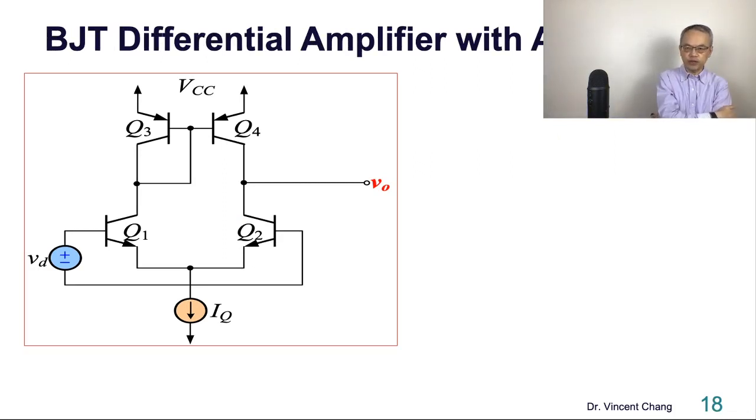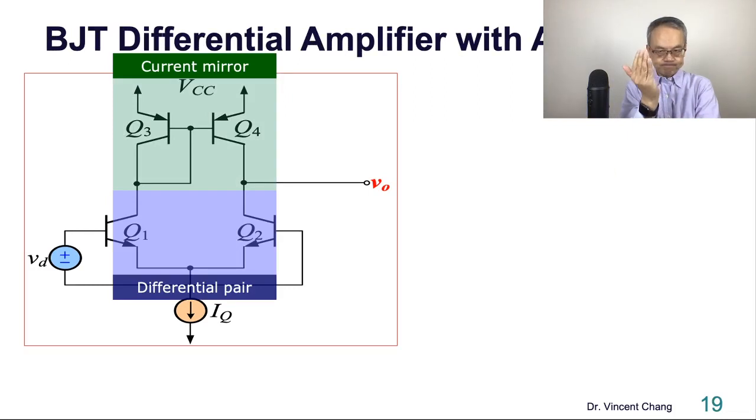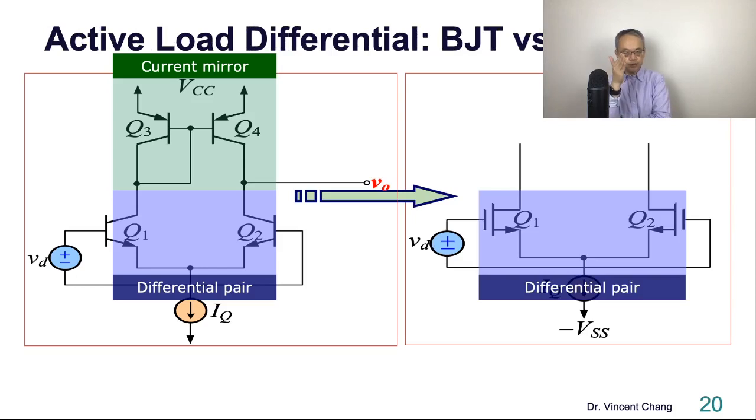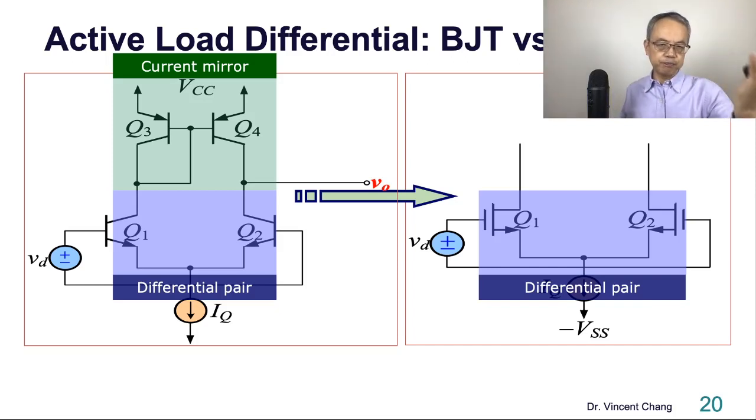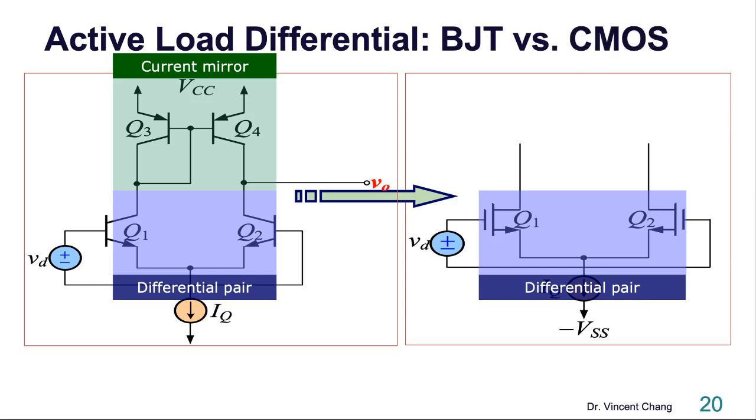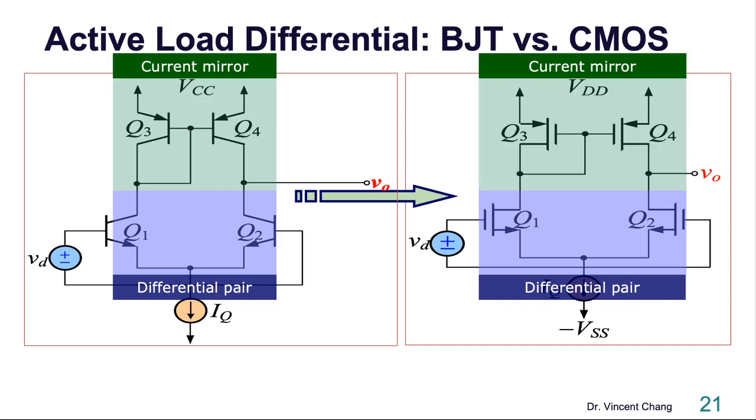BJT differential amplifier with active load: differential pair and current mirror. Let's try to see its counterpart on CMOS side, BJT versus CMOS. So now NPN, let's convert the NPN to NMOS and PNP current mirror to PMOS current mirror on the top. So now look at the right: NMOS is a differential pair, PMOS current mirror as an active load.